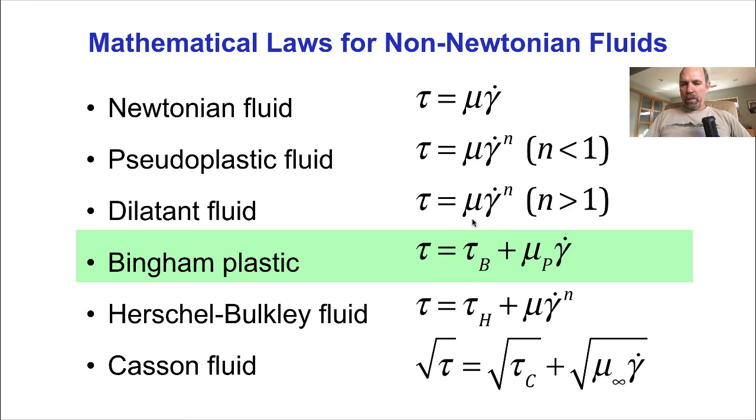In the Bingham plastic, as we mentioned, there is a constant yield stress, tau b. And another example of this type of material is the Herschel-Bulkley fluid, which has a constant shear stress, tau h, and a non-linear dependence on the shear rate.